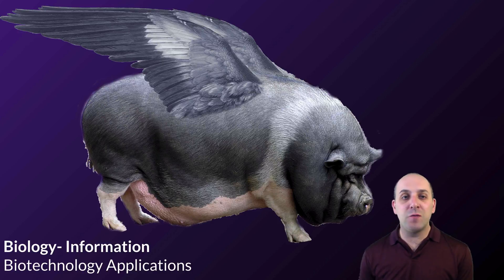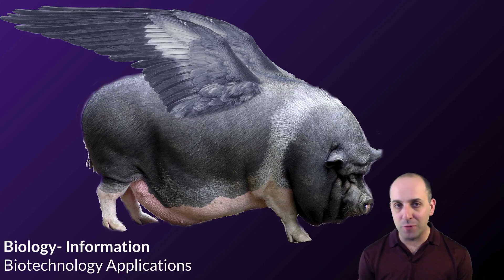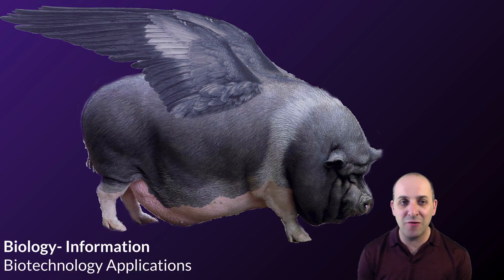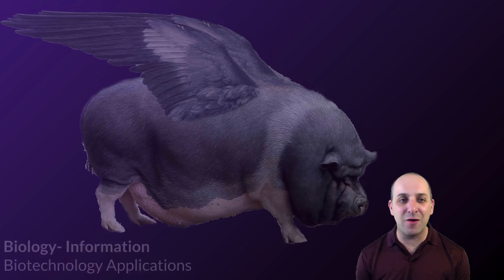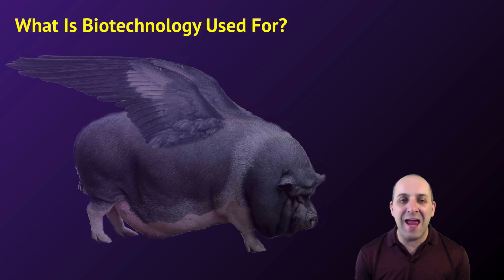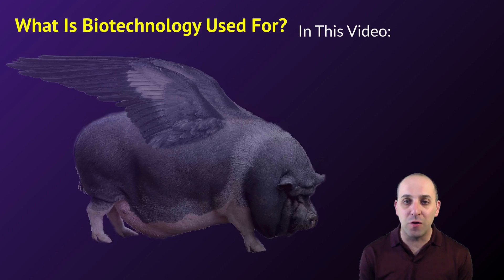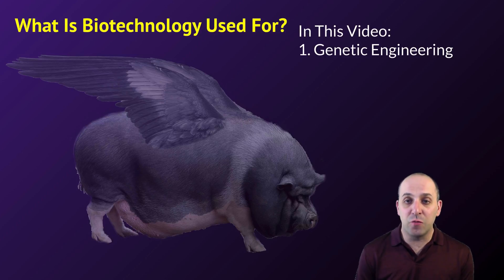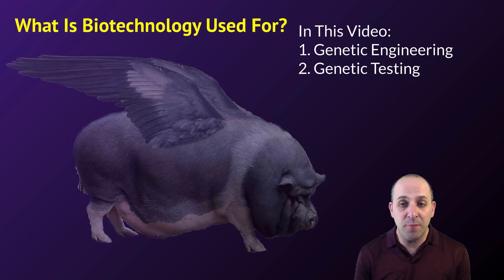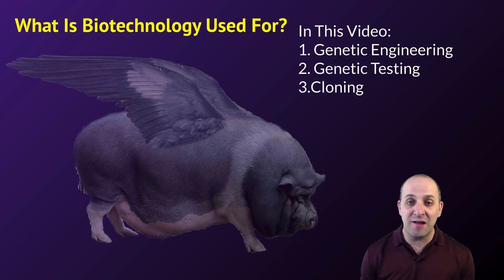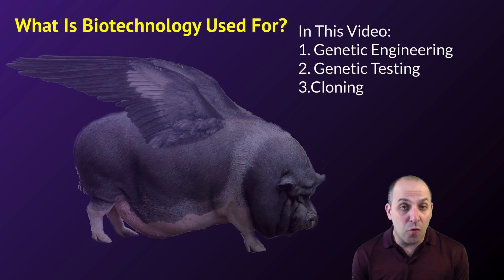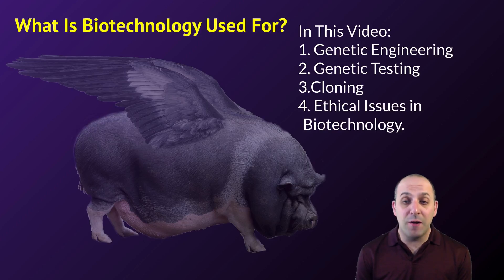I figured I'd start this one out with a pig with wings, because we can't actually make a pig with wings. But I still think it's cool and it gets at the question of what can we do with biotechnology? In this video, we're going to look at examples in genetic engineering, genetic testing, and cloning, and then talk a little bit about the ethical issues in biotechnology.